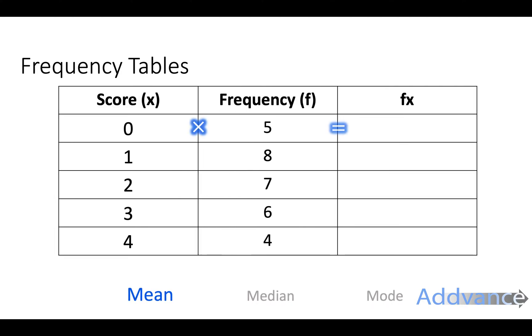On the table we're going to add another column called fx, and to get this column we're going to multiply the first two columns. 0 times 5 is 0, 1 times 8 is 8, 2 times 7 is 14, 3 times 6 is 18, 4 times 4 is 16.